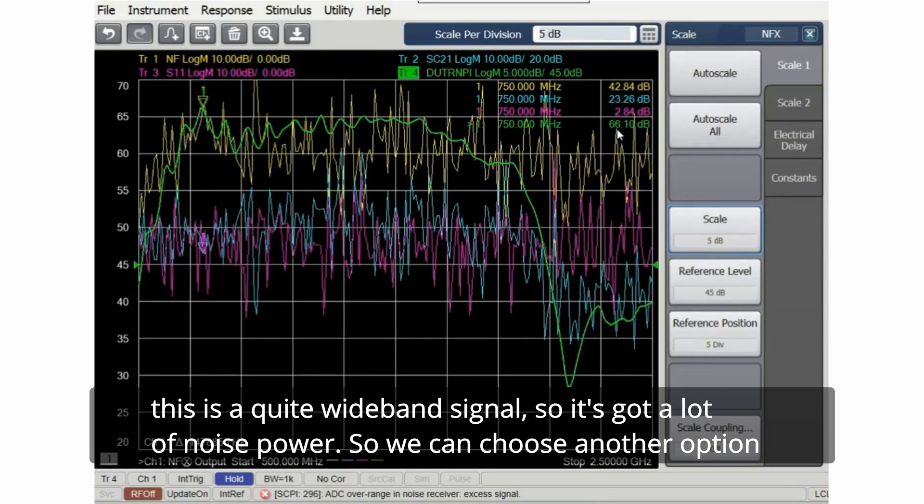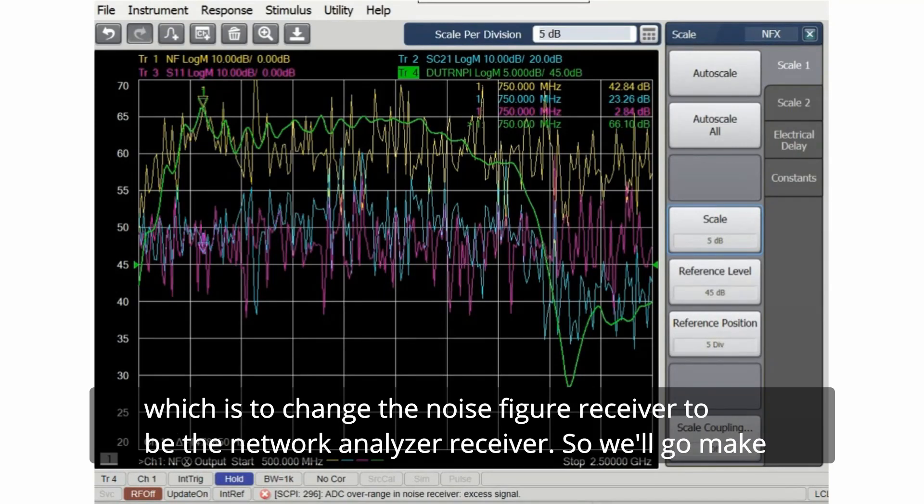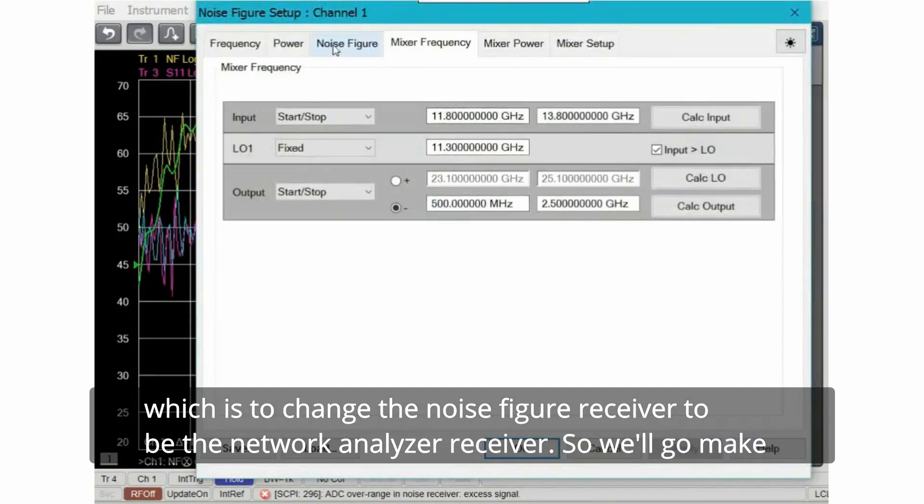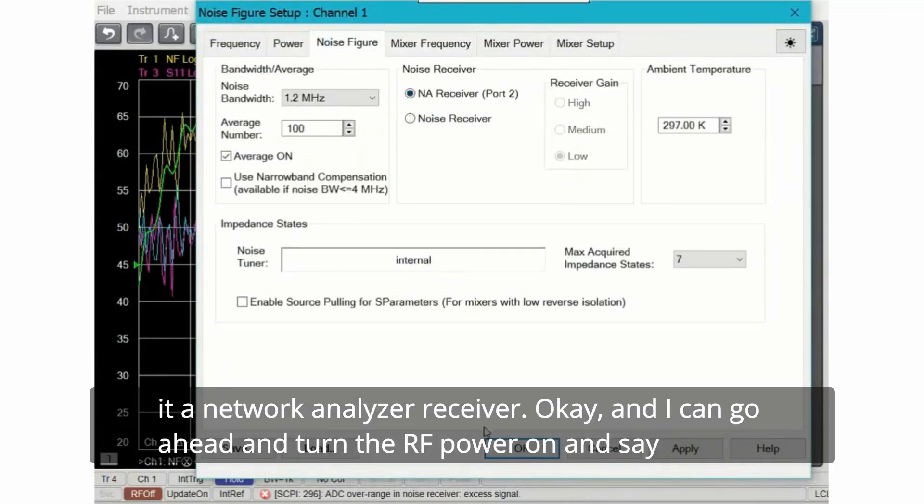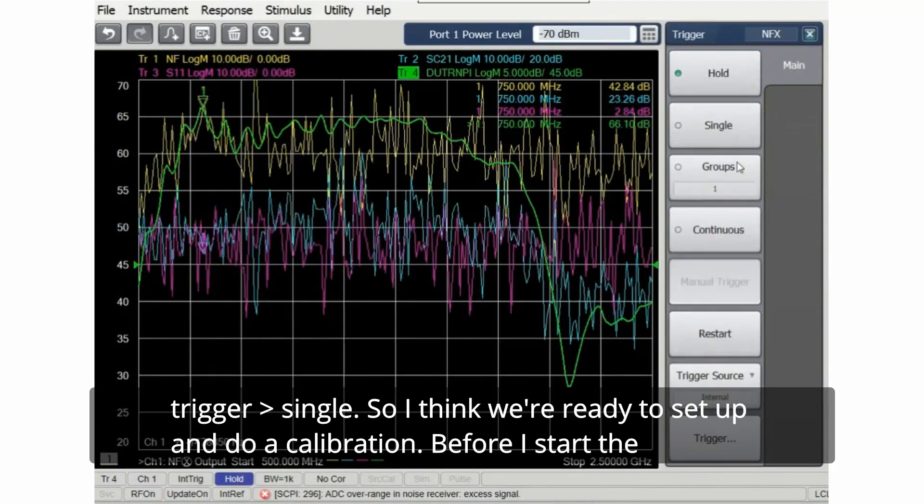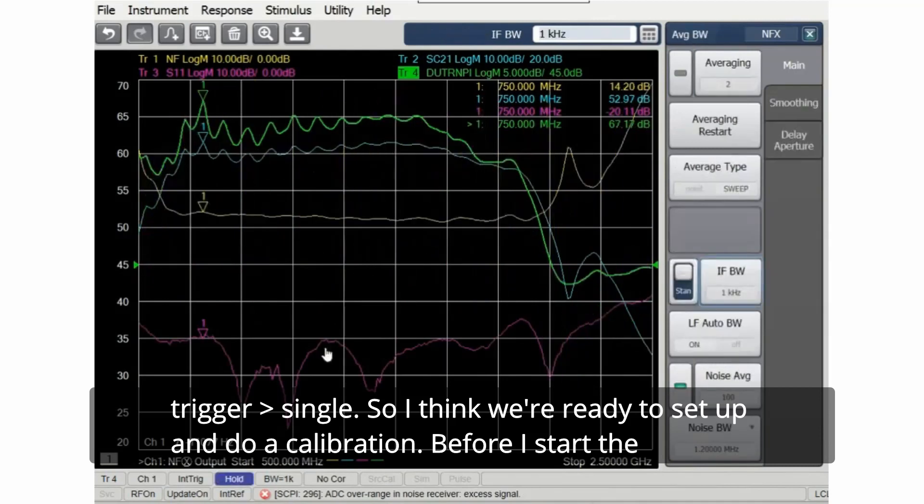So we can choose another option which is to change the noise figure receiver to be the network analyzer receiver. So we'll go make it a network analyzer receiver. And I can go ahead and turn the RF power on as a trigger single, so I think we're ready to set up and do a calibration.